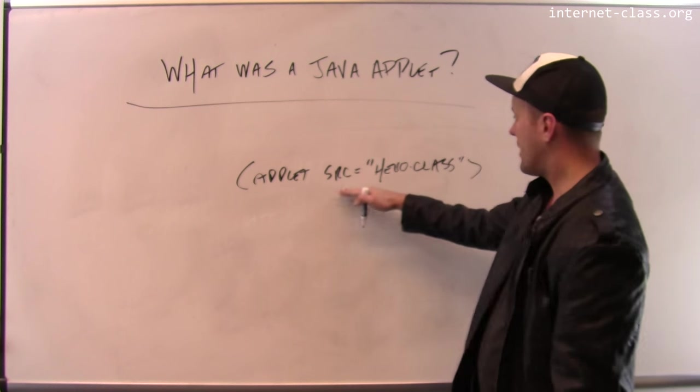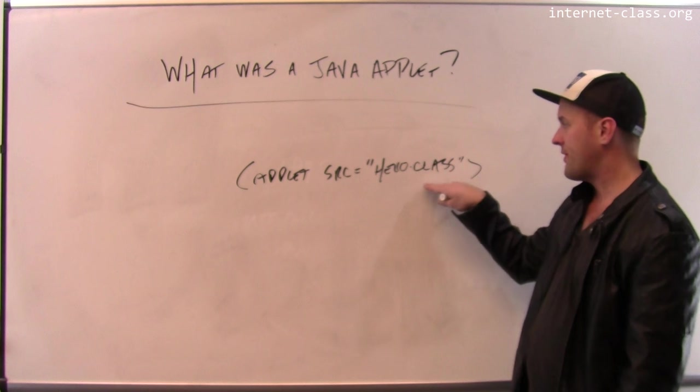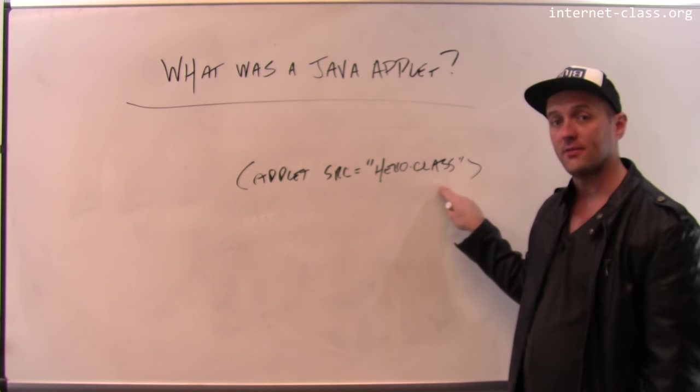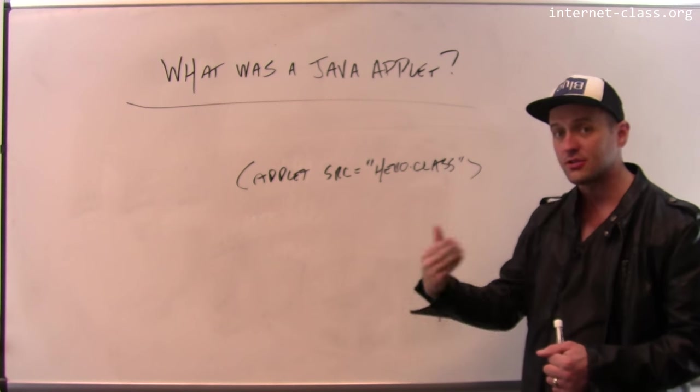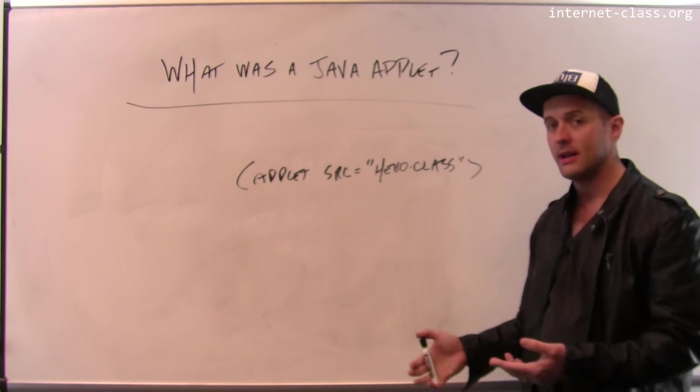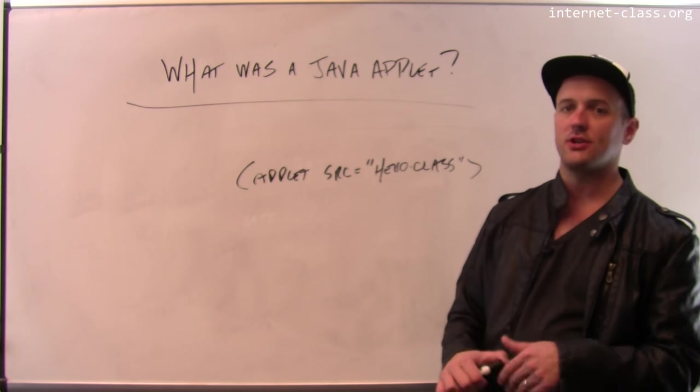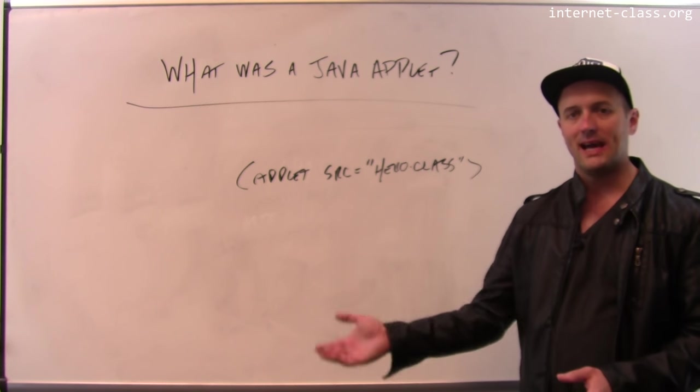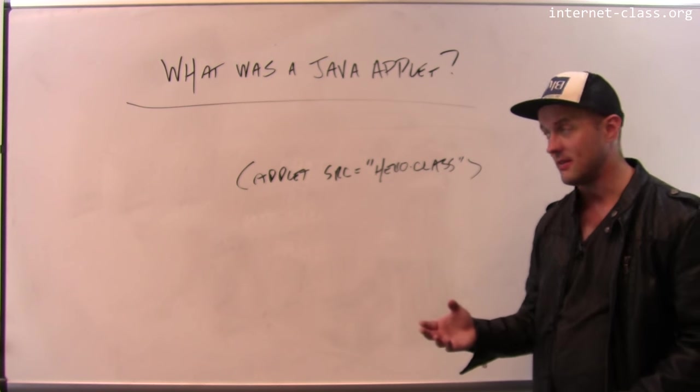Like other external resources, when the page was loaded, your browser would fetch this .class file. That .class file contained Java bytecode, compiled Java code, that would then run on the page. And it could do things like manipulate the page, it could draw things, it could add text that could interact with users, it could do a lot of the same things that JavaScript does today.